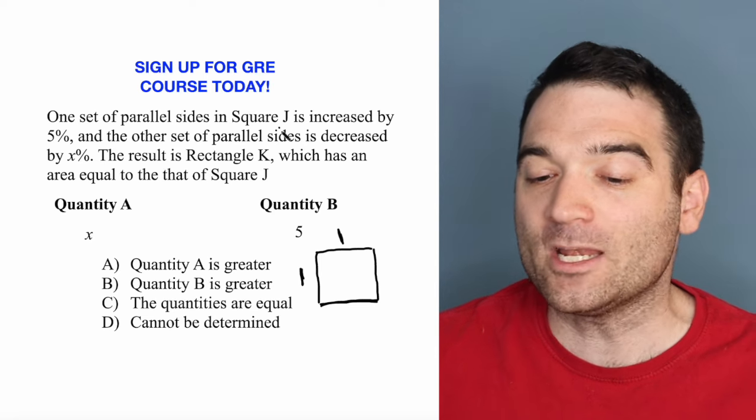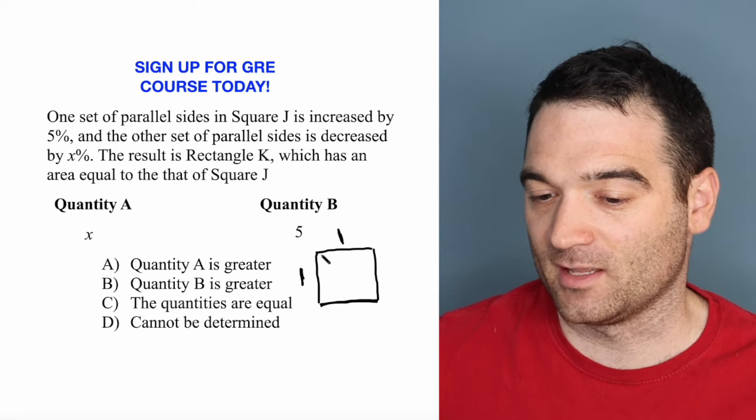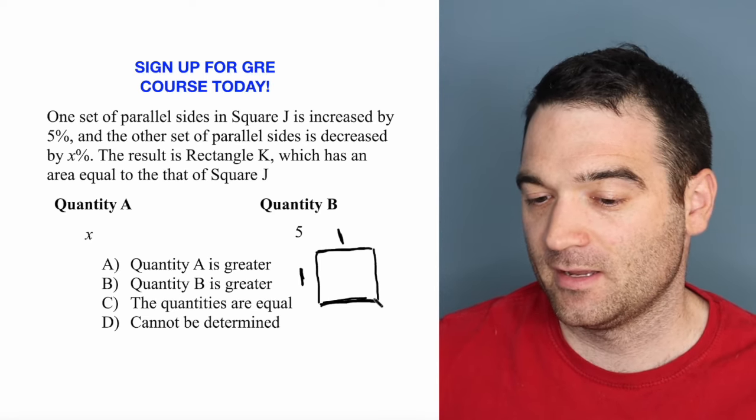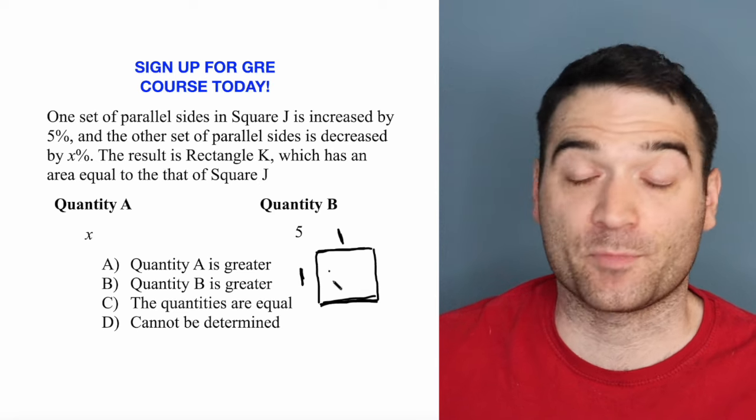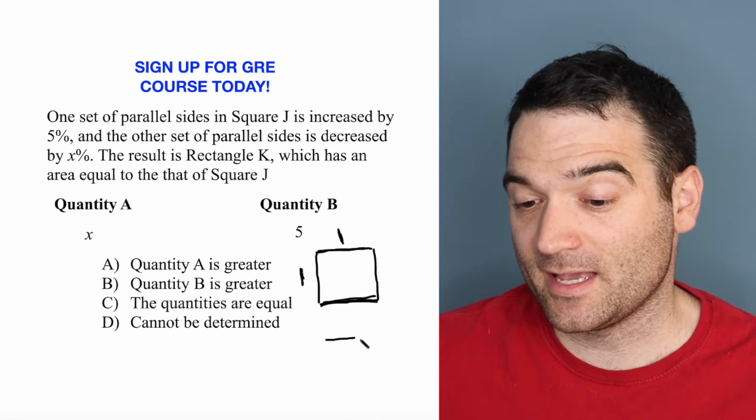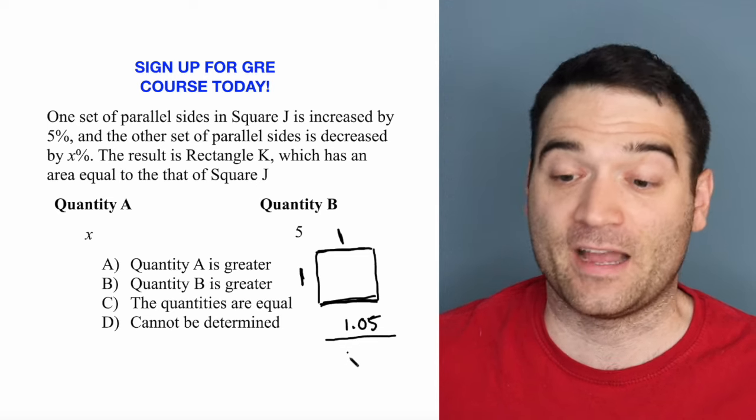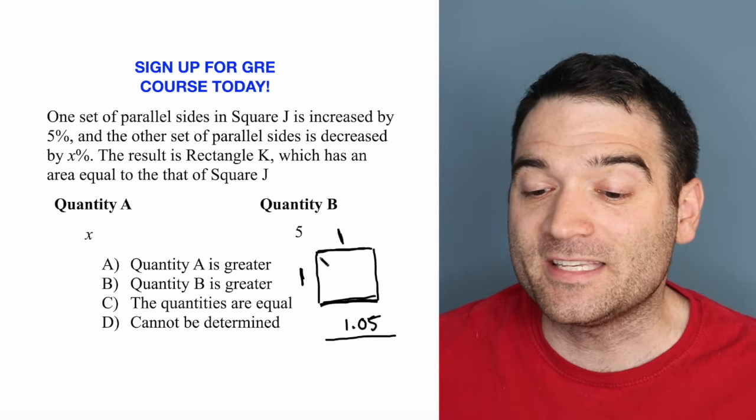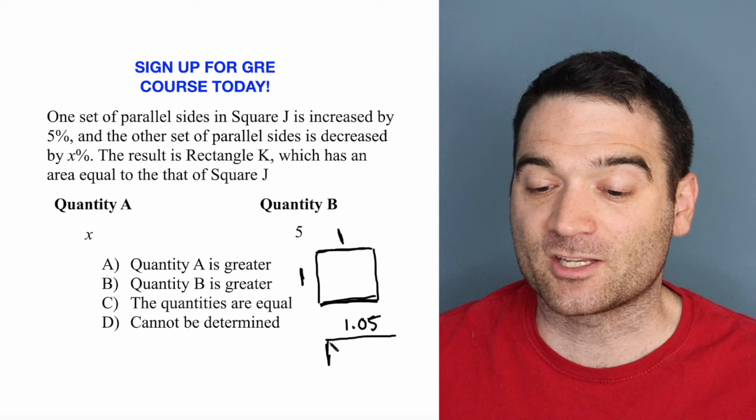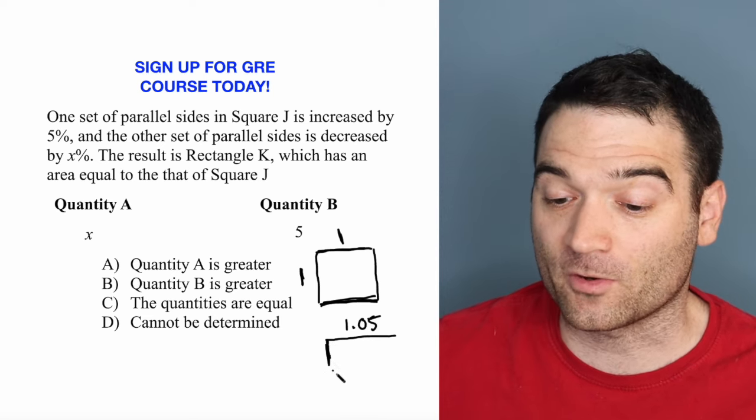Now, what are we going to do? We're going to increase one set of parallel sides here, maybe this one and this one, by 5%. So that means this comes out to 1.05. That's a 5% increase. And then we're going to decrease this by some amount, by X percent, so it's going to be shorter.